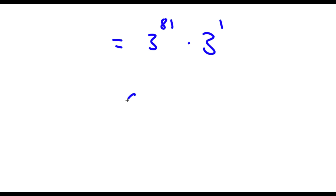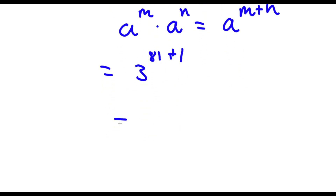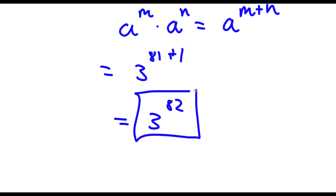Now if I have something in the form a to the power of m times a to the power of n, this is equal to a to the power of m plus n. So 3 to the power of 81 times 3 to the power of 1 equals 3 to the power of 81 plus 1. Now 81 plus 1 is simply 82, so this equals 3 to the power of 82. That's the final answer.